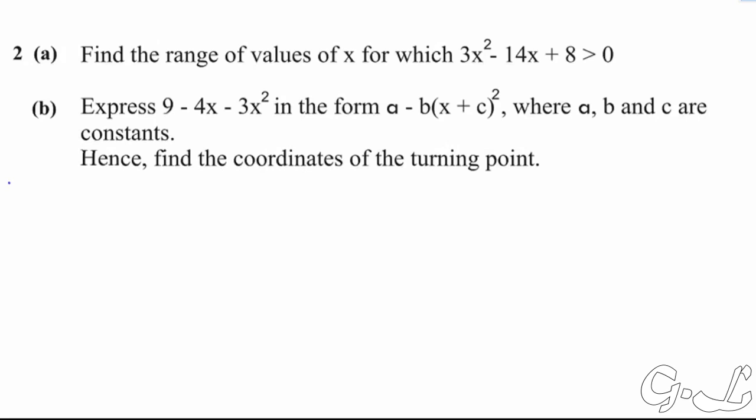Part B said: express 9 minus 4x minus 3x squared in the form A minus B open brackets X plus C close brackets to the power 2, where A, B and C are constants. We already expressed 9 minus 4x minus 3x squared into that form.